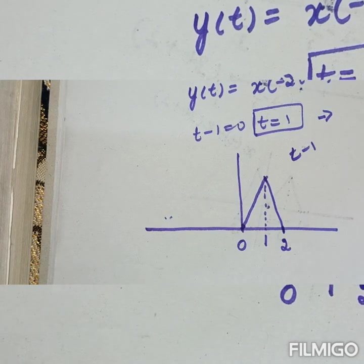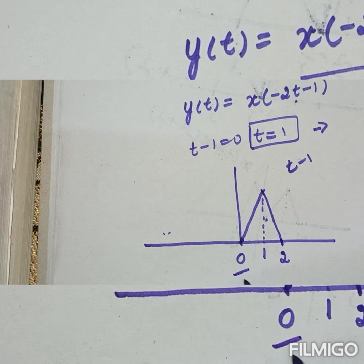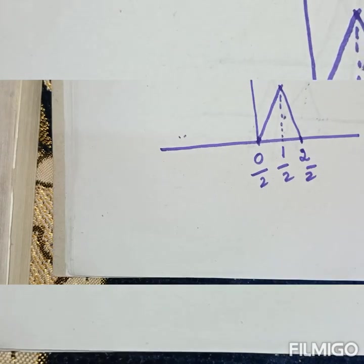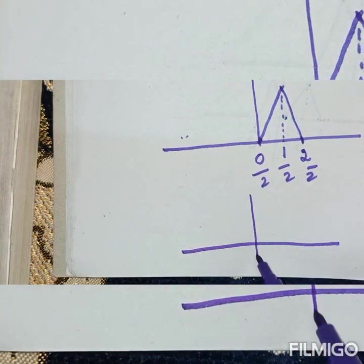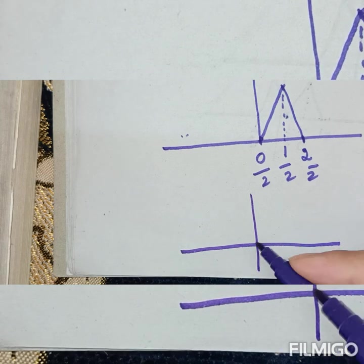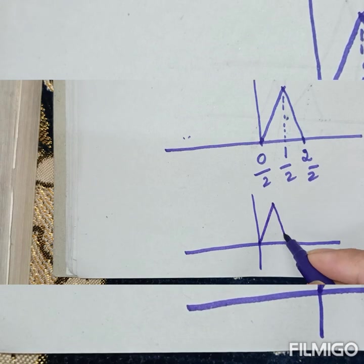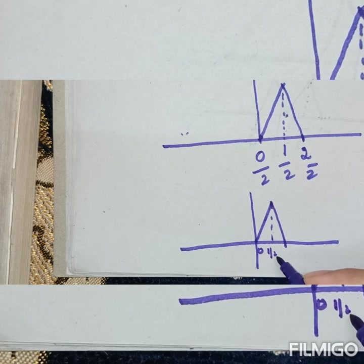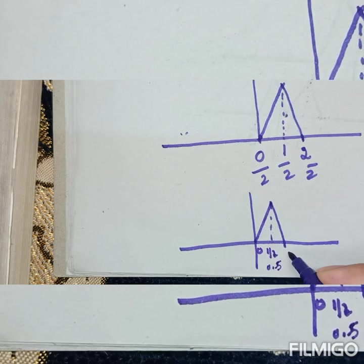Now the scaling process: divide the time period by 2. 0 by 2 equals 0, 1 by 2 equals 0.5, and 2 by 2 equals 1. So the signal now runs from 0 to 0.5 to 1. This gives a smaller triangular signal.